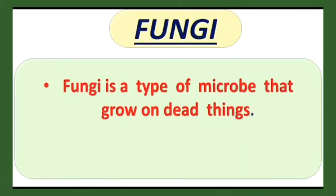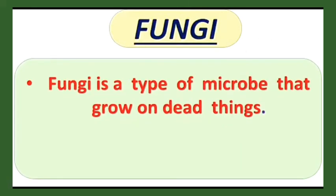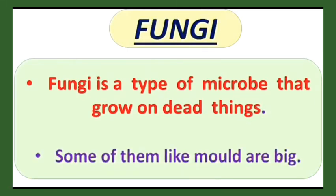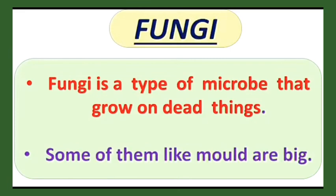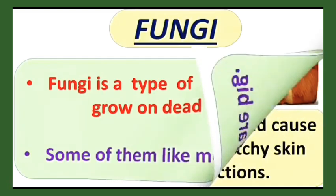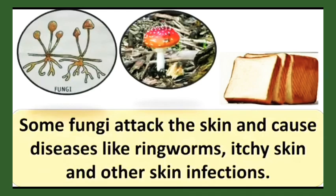Fungi is a type of microbe that grows on dead and decaying plants and animals. Some examples are yeast, mushrooms that you eat, wheat mushrooms, and mold. Mold grows on plants, wood, fabric, and also on food like a slice of bread. Some fungi attack the skin and cause diseases like ringworm, athlete's foot, and other skin infections.